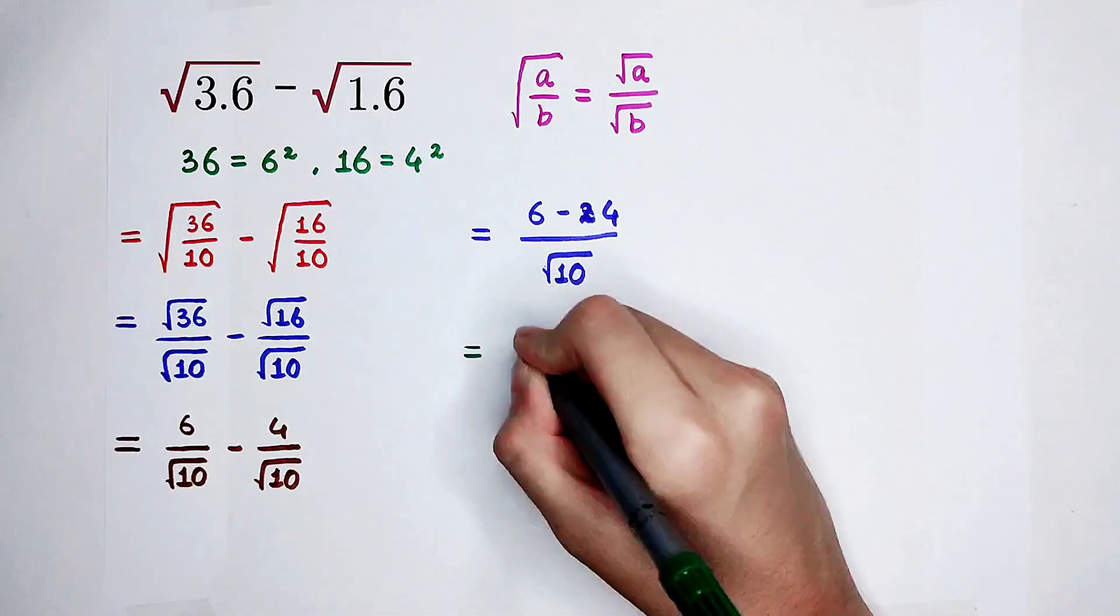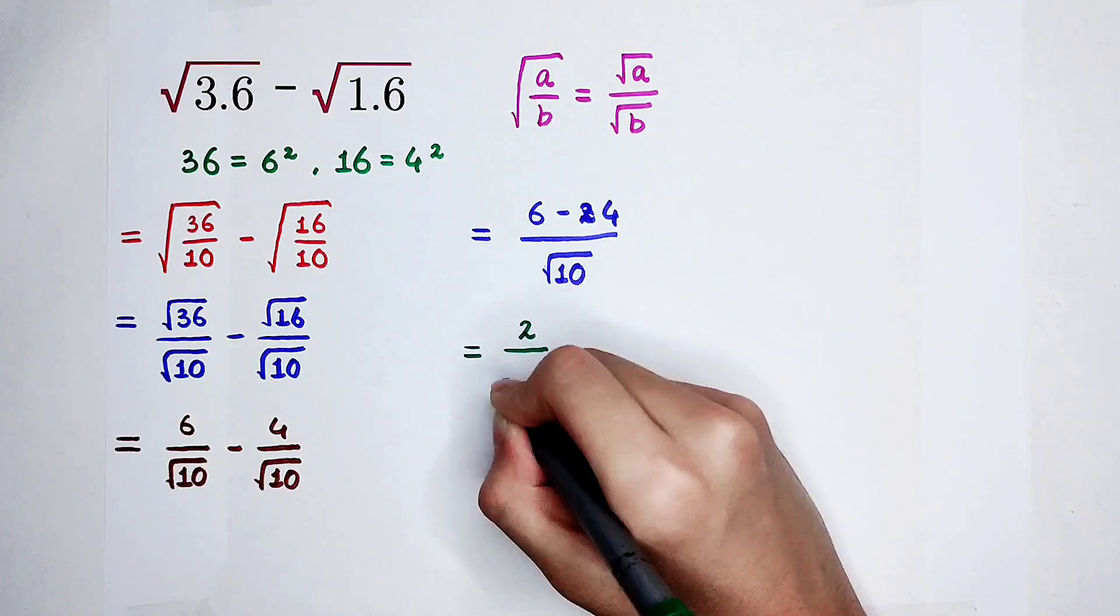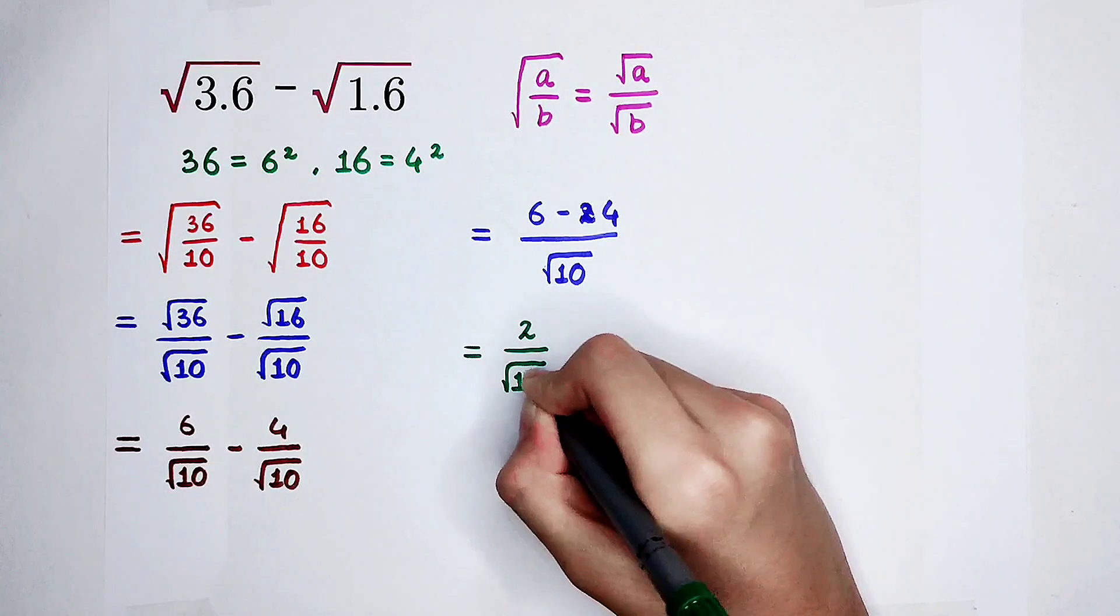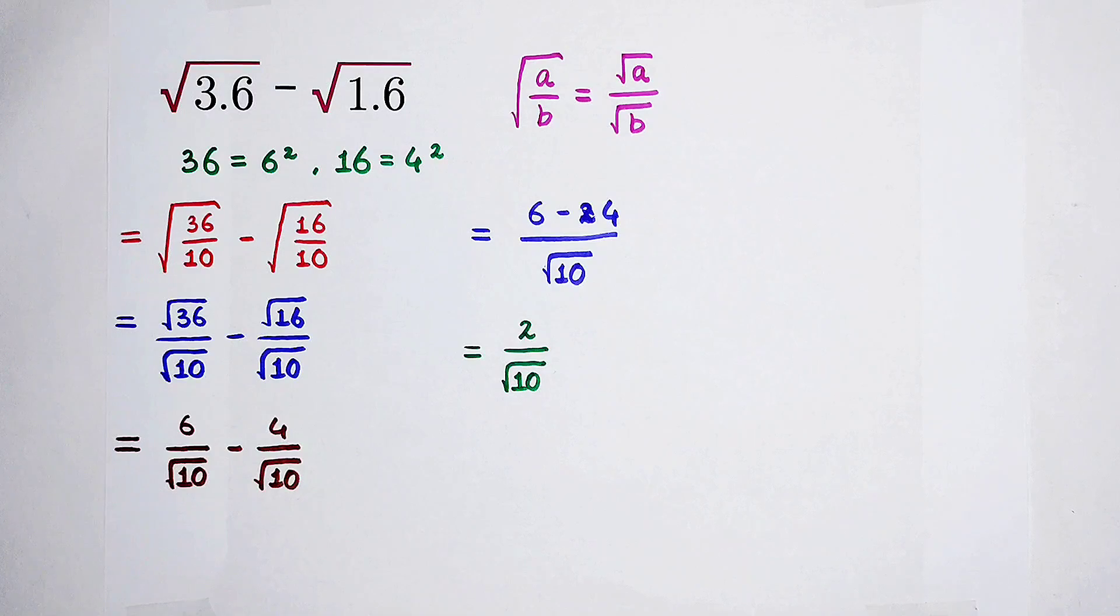6 minus 4 is 2, it is 2 divided by square root of 10. Now, there is a square root on the denominator. Not very good. I don't like it. What should we do?